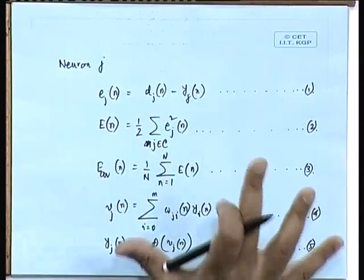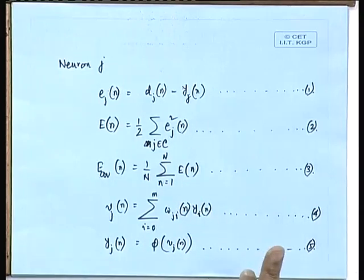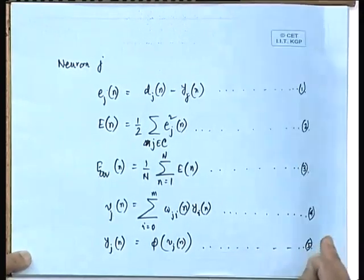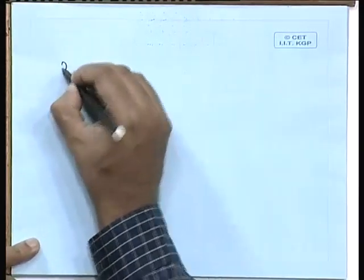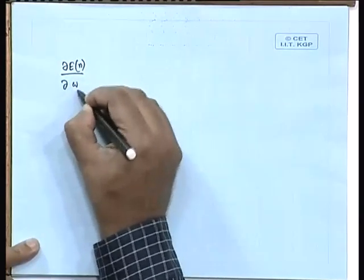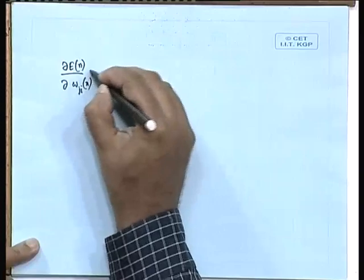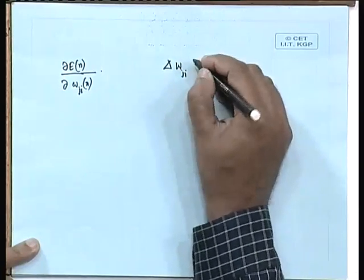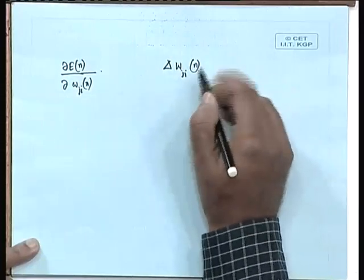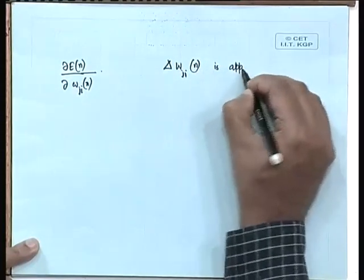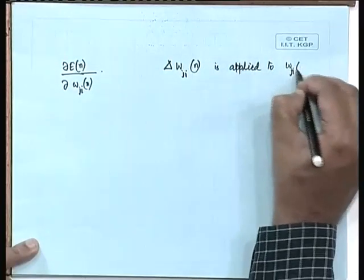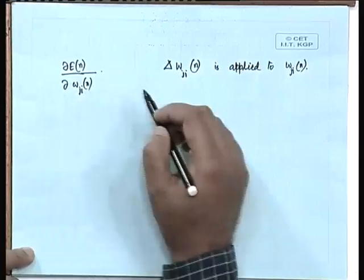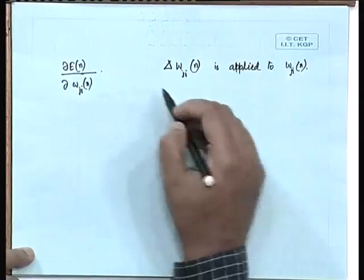The actual output Y_j(n) is written as the activation function phi of V_j(n) — this is equation number 5. These are the 5 basic equations with which we begin our analysis. What follows is a straightforward mathematical treatment where we calculate the partial derivative of E(n) with respect to W_ji, because the change of weight delta_W_ji is proportional to this partial derivative.